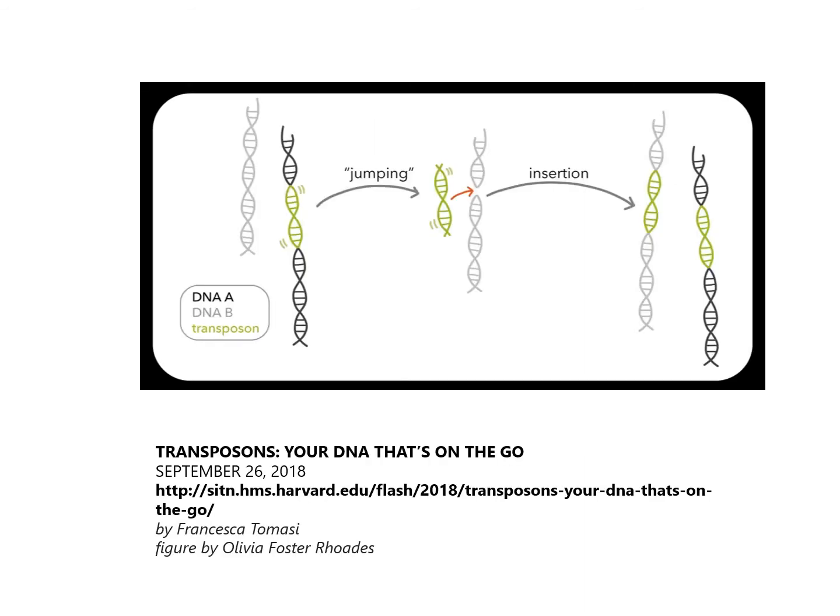One of these movable genetic elements is called transposons — also called jumping genes. The odd thing about them is they don't have a permanent location on the cell's chromosomes; they can be excised from one spot, moved around, and inserted into other spots. If you took that little bit of DNA and moved it from one organism to another, that's essentially what a virus does.